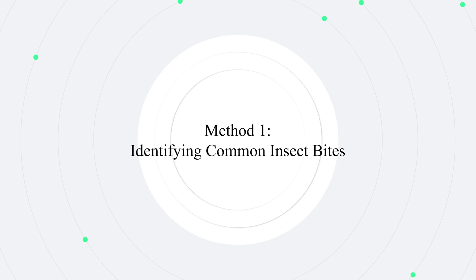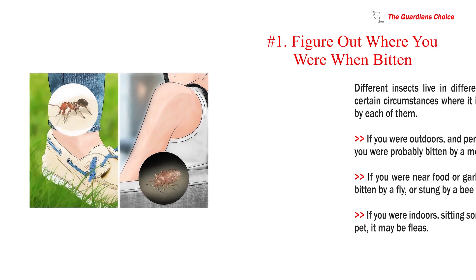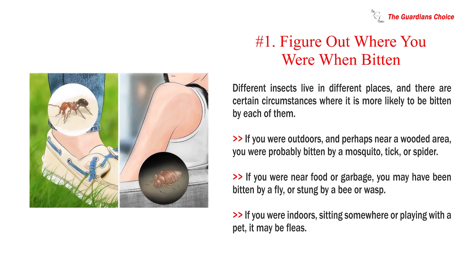Method 1: Identifying common insect bites. Number 1: Figure out where you were when bitten. Different insects live in different places, and there are certain circumstances where it is more likely to be bitten by each of them.